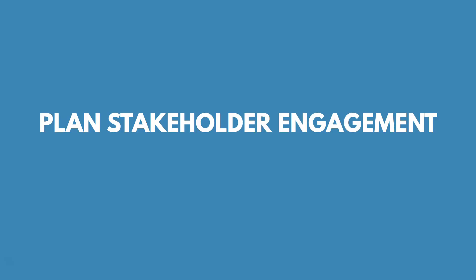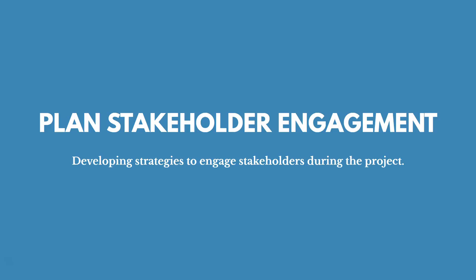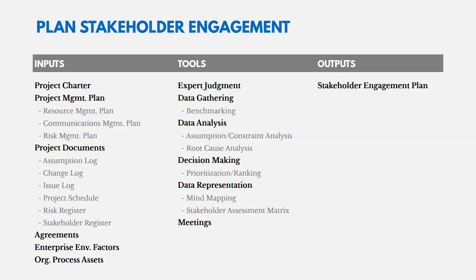Plan stakeholder engagement means developing strategies to engage with our stakeholders during the project, because stakeholders could have a significant impact — either positively or negatively. Like all plan processes, you're going to see the project management plan as an input, and the individual plan — in this case the stakeholder engagement plan — as an output.